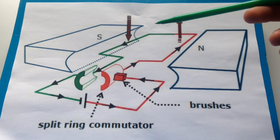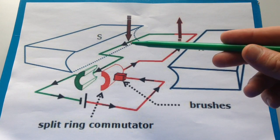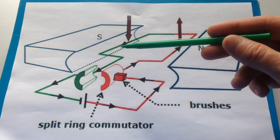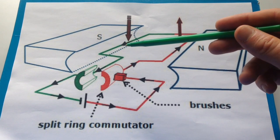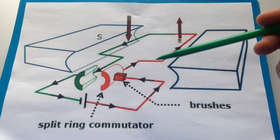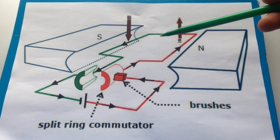And so it'll move around in a circle over the top. This side, we've got the current moving in the opposite direction. Obviously, the magnetic field is still the same, but the current's moving in the opposite direction. And so this side will be forced downwards, as long as there is a current flowing through those two wires. So the motor will spin.